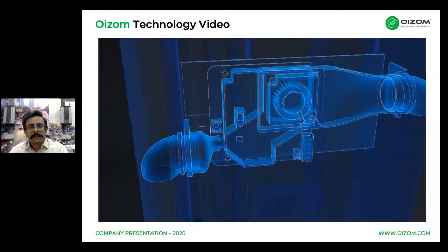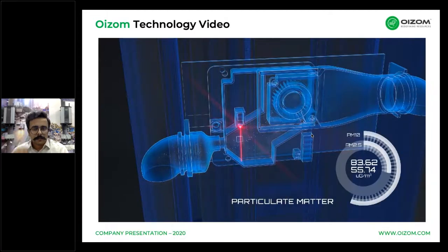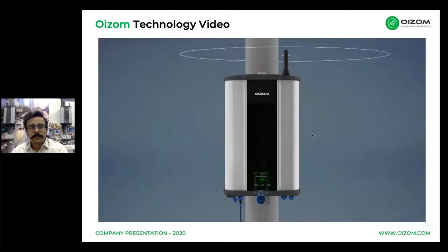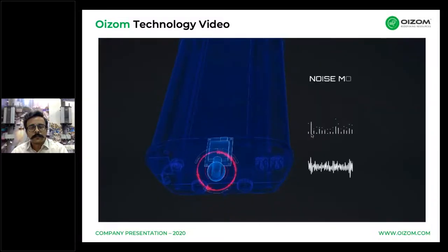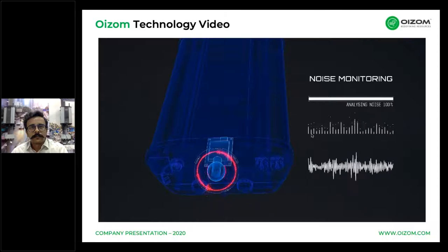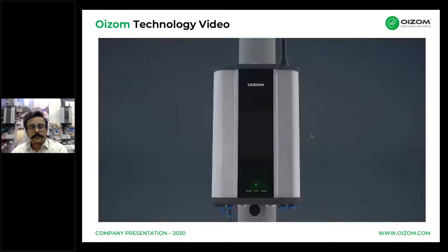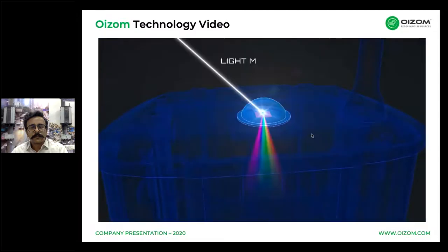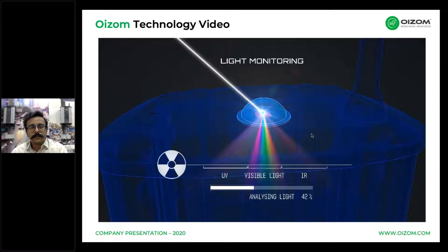It counts every single particle in the air sample using a highly accurate laser beam, and is capable of monitoring particulates of various sizes ranging from 1 micron to 100 microns. The downward-facing class one noise sensor is ideally positioned to capture environmental noise up to 140 decibels. The top magnetic pyranometer does solar radiation analysis by diffracting light rays into UV, IR, and visible light spectrum.